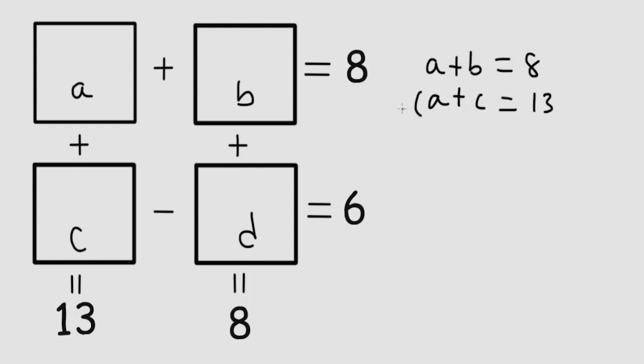So subtract this whole thing. It's like multiplying negative one across. A minus A cancels out. So B minus C is equal to 8 minus 13, which is negative 5.